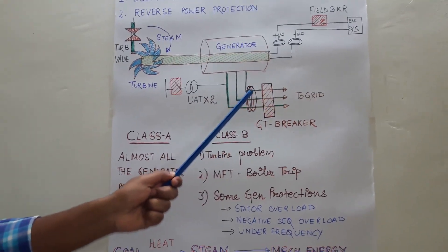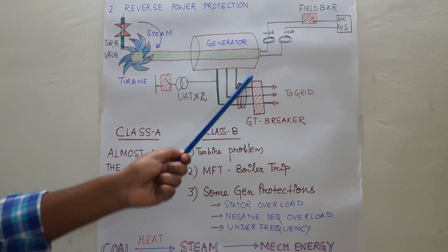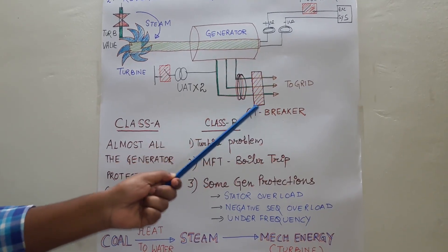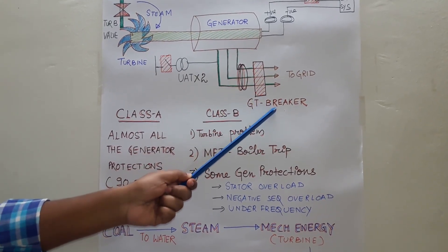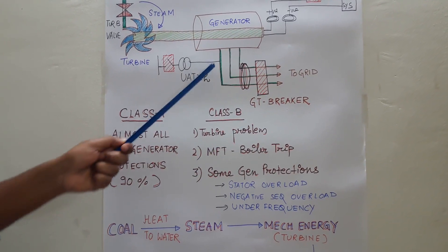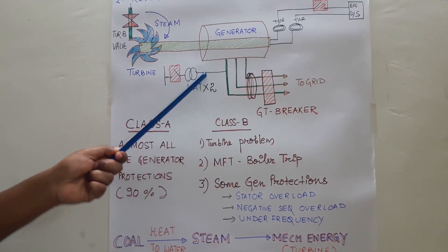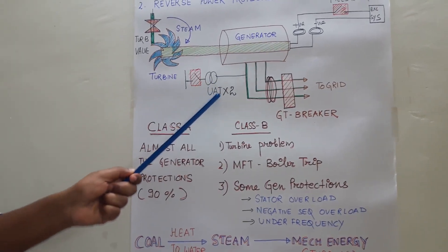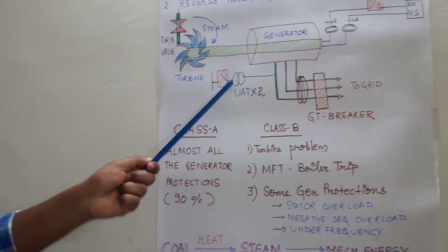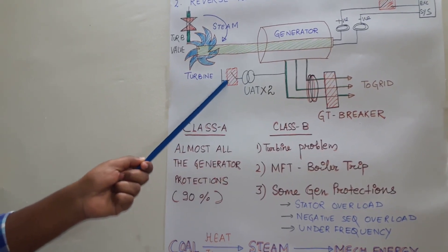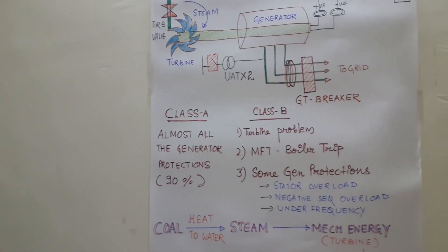Just after the generator transformer there is a circuit breaker called the GT breaker. From this IPBD, a tapping goes to the unit auxiliary transformers, and from here the auxiliary power is distributed into the unit.